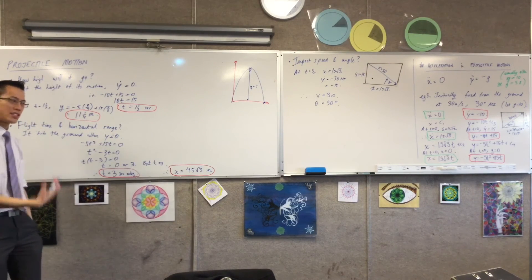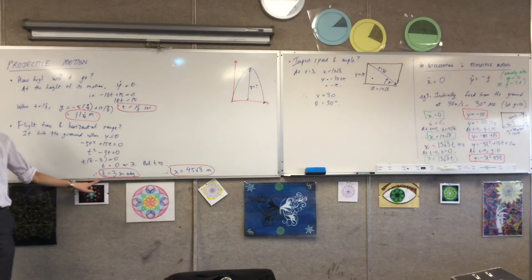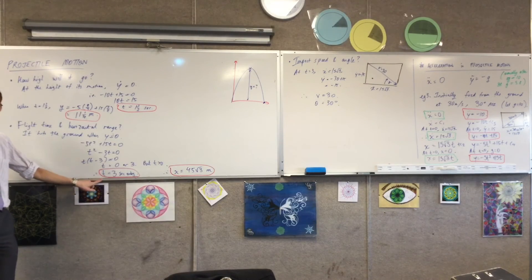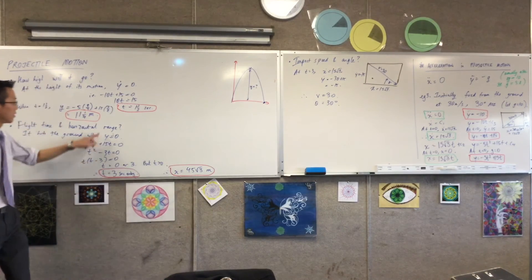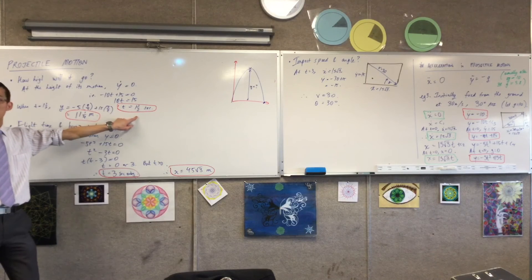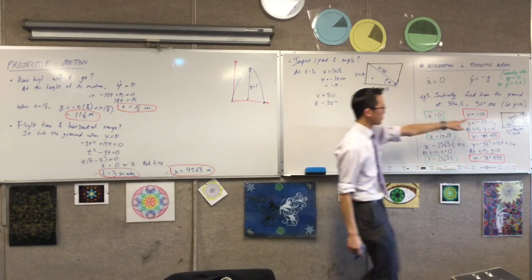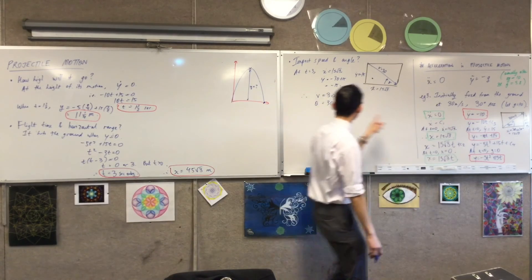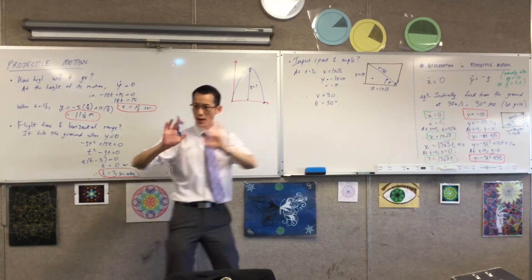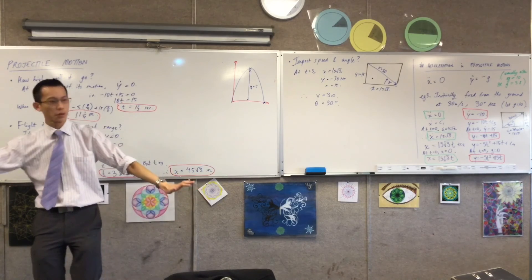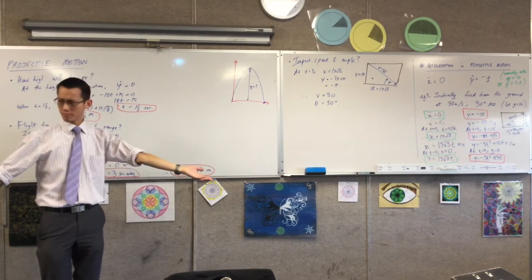So you can see there's this huge amount of symmetry. Remember I said, hey, that's suspicious, isn't it? Your flight time is exactly double the time it takes to get to the vertex of motion, the height of its motion. And in the same way, the way you began, here it is. The way you began is how you ended if it's a perfectly symmetrical situation. If I fired from the ground and if I landed on the ground. Does that make sense?